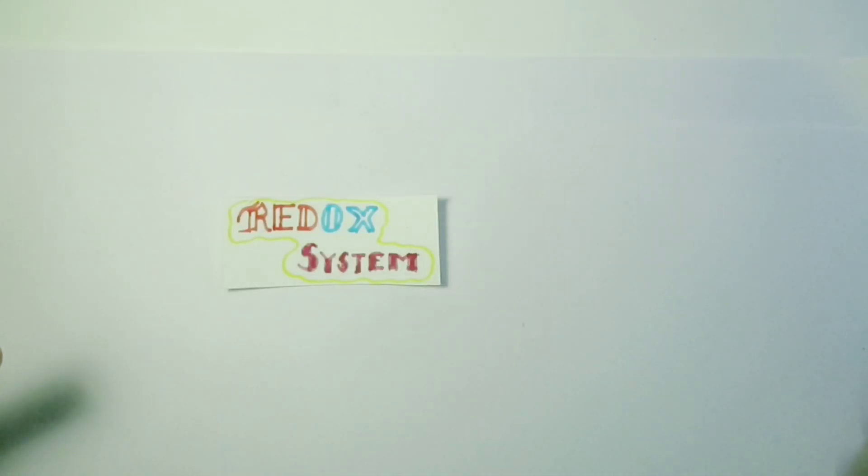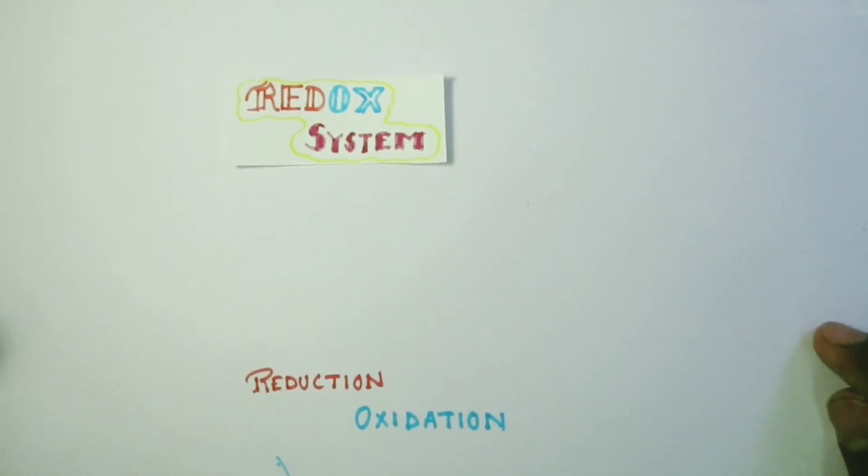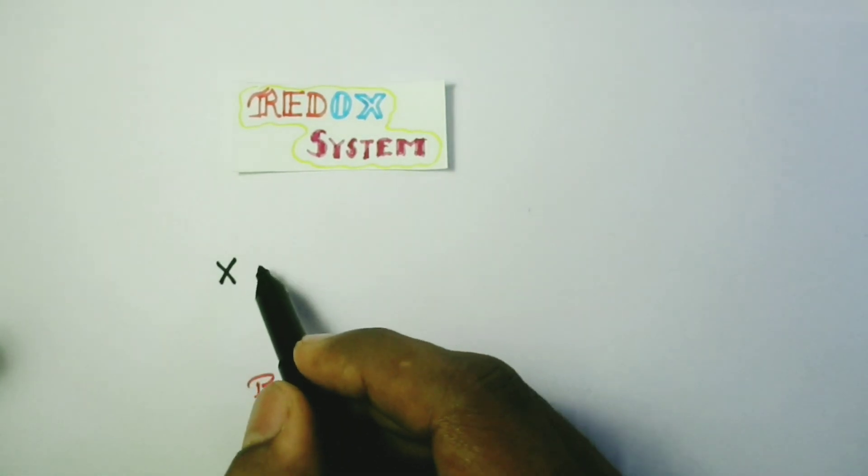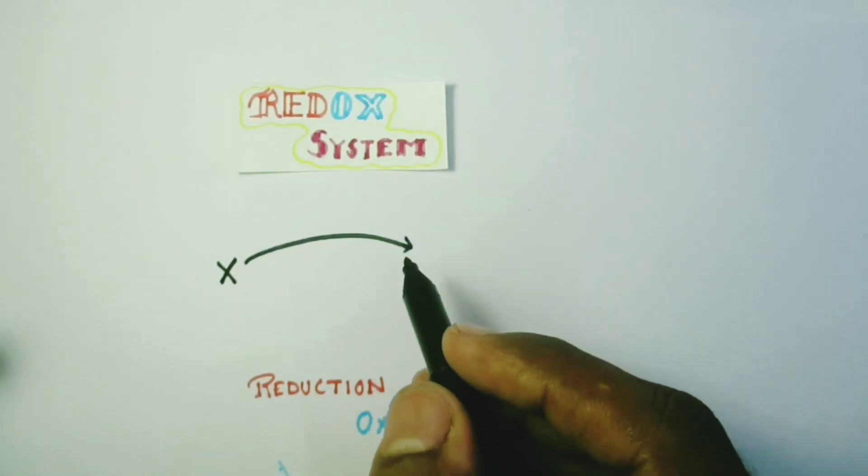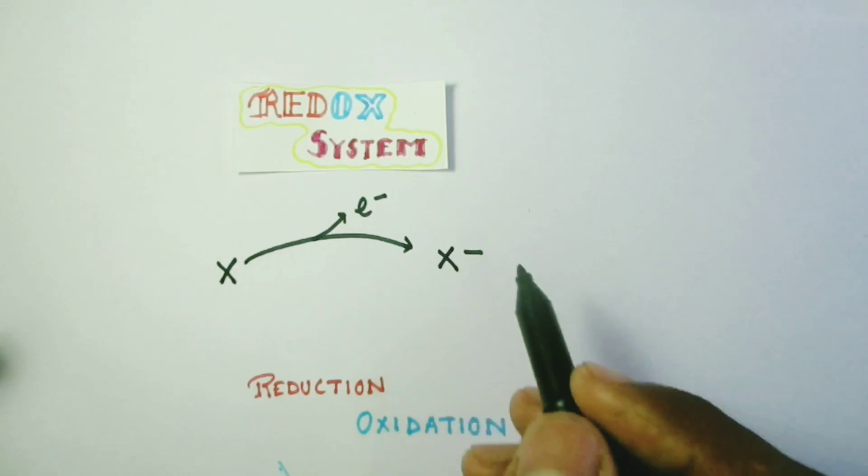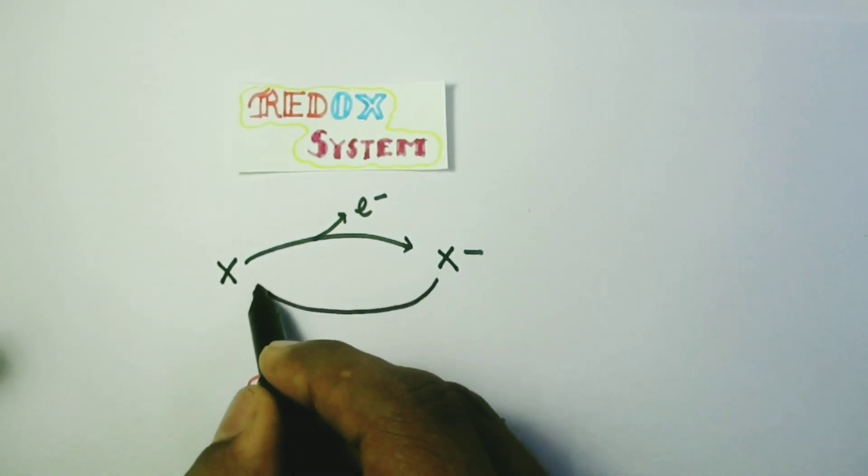What exactly is a redox system? It is a simplification of the term reduction and oxidation reaction or oxidation-reduction reaction. In a redox system, suppose X is converting into X minus, and in order to do so, it will give up an electron. And this process is known as oxidation. In order to convert X minus back to X, it needs to take up an electron. And this process is called reduction.